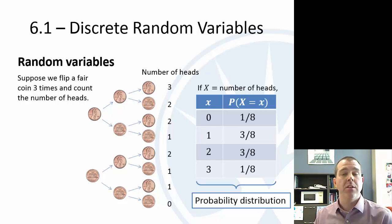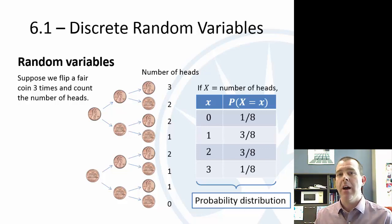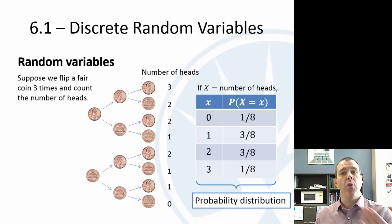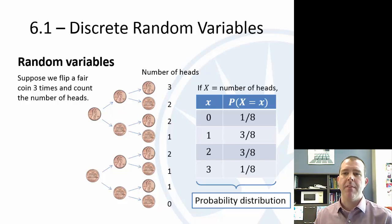This table is called a probability distribution — one way to represent it, where you're explicitly stating what are the outcomes and what is the probability for each. Later on in the next section, we'll talk about specific variables where you can come up with formulas, but one way to do it is just to have a table.